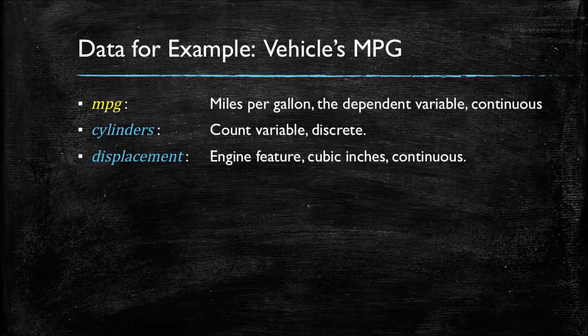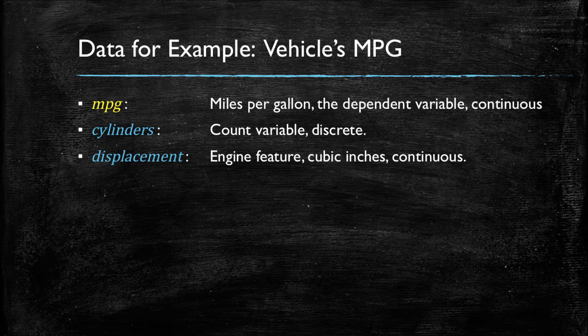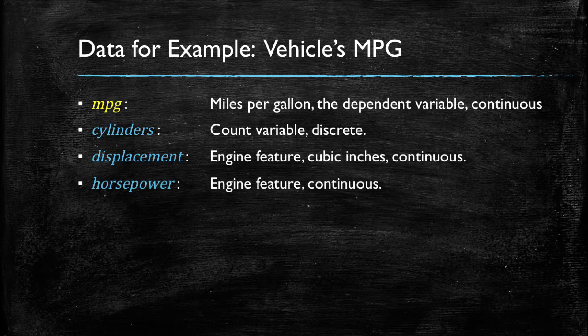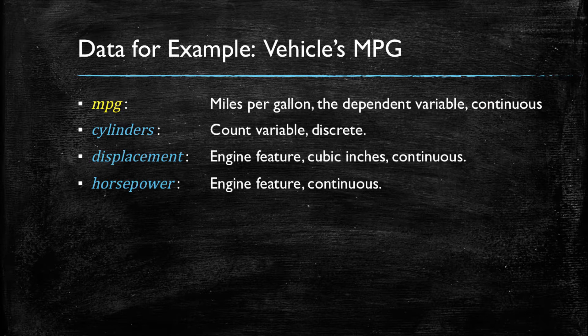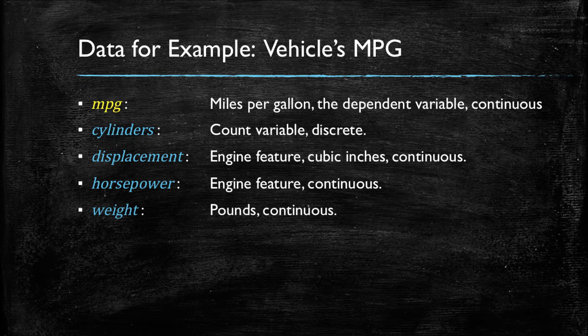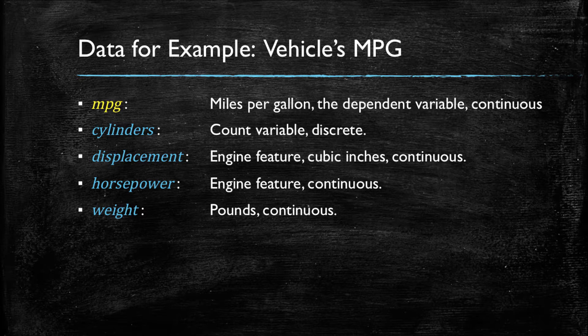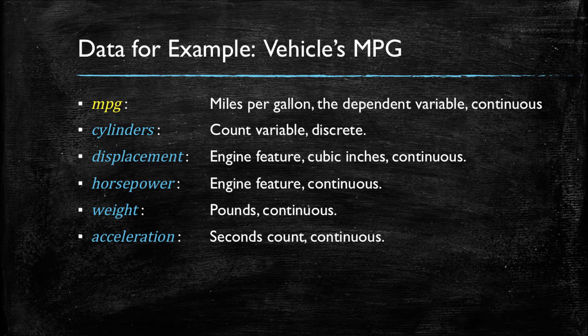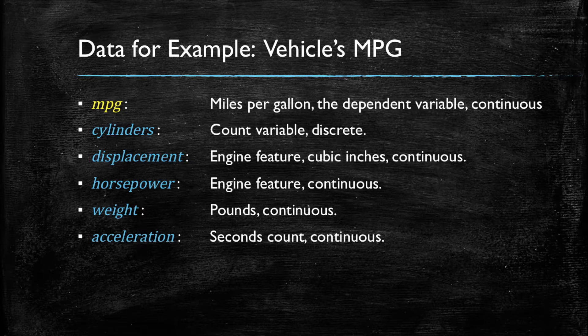Then we have displacement, which is a feature of the engine that quantifies how much liquid is displaced by the pistons of the engine, and this is a continuous variable measured in cubic inches. We then have horsepower, which is a continuous measure traditionally used to measure how strong or how potent an engine is. We then have weight of the entire vehicle measured in pounds, a continuous variable.